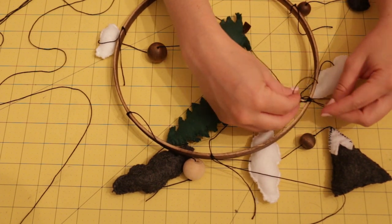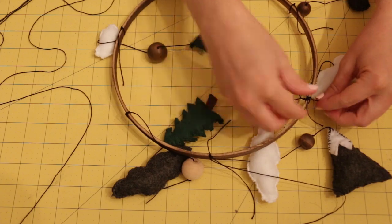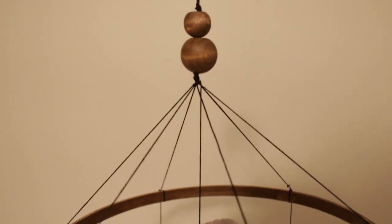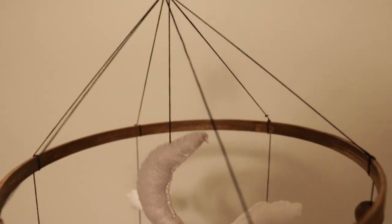Once all strings are attached to the hoop, pull the strings together and string the two balls through the strings. Making sure the mobile was level, I tied a knot under the balls to keep them in place.